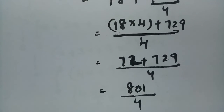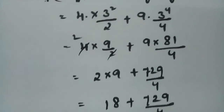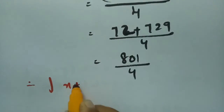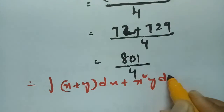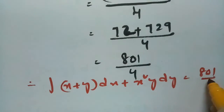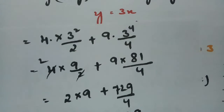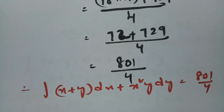The final answer is 801/4. Therefore the integral of (x + y)dx + x²y dy equals 801/4. Thank you so much for watching — please practice on your own and share the video if you liked it. Thank you.